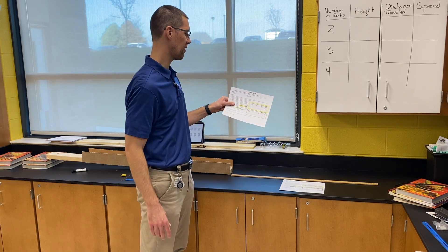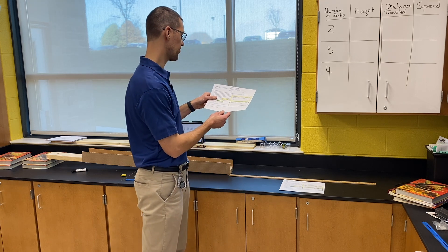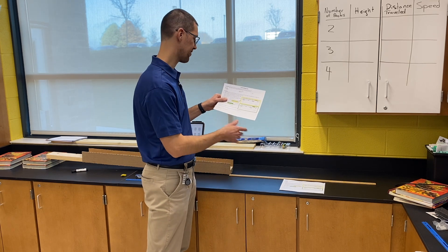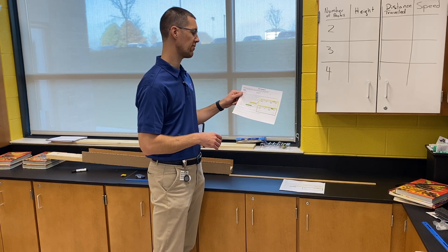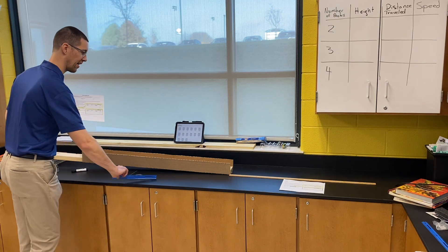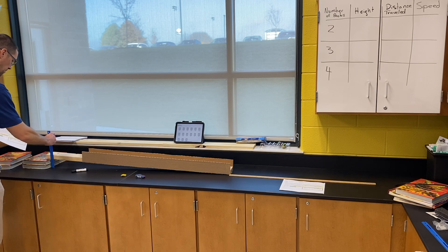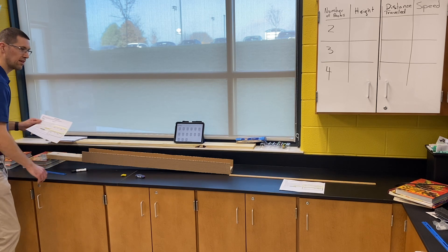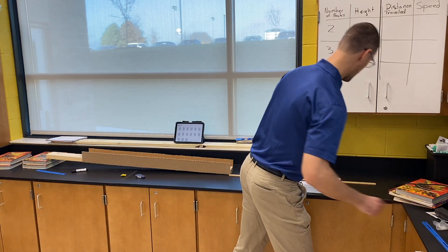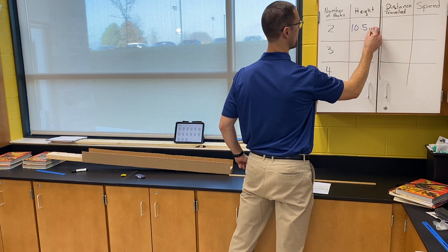Step three: lay a meter stick on the floor nearby the end of the board, beside the path the car will take after it has rolled down the board. We have that set. Step four: measure and record the height from the floor to the top of the board. Using the metric side, from the top of the countertop to the top of our board, that is 10 and a half centimeters. Go ahead and write that down.